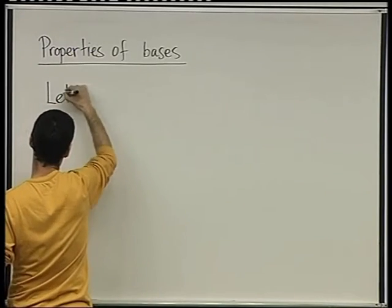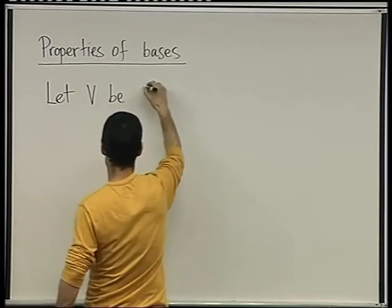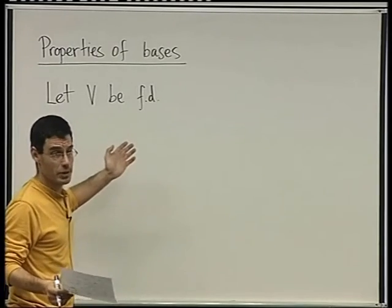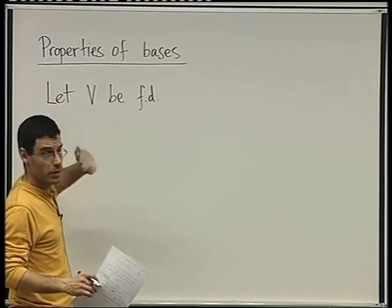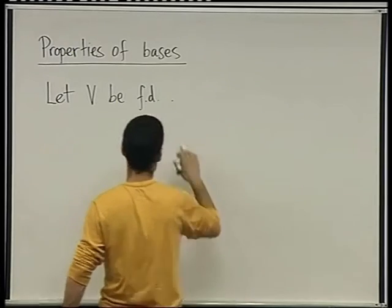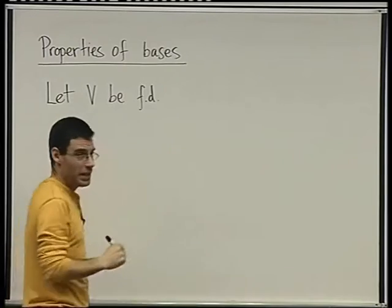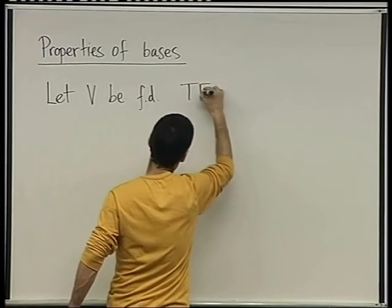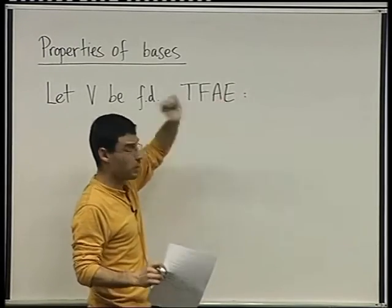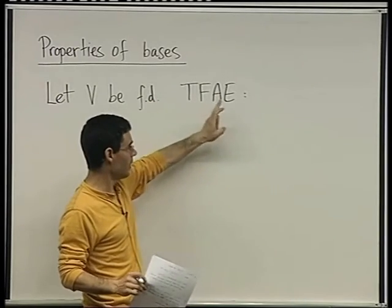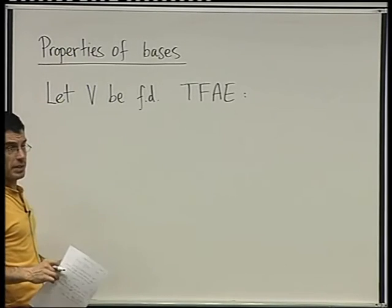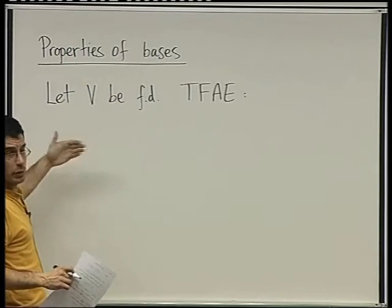Let V be finite dimensional. Some of these theorems are going to be true even for non-finite dimensional vector spaces, but right now we're interested only in finite dimensionals. So TFAE — this stands for 'the following are equivalent' — meaning that I'm going to list three things, each of which implies the others. So it's a big if-and-only-if statement.